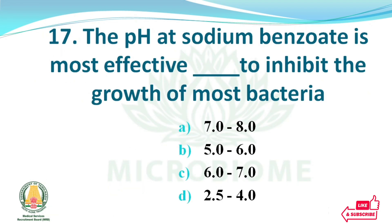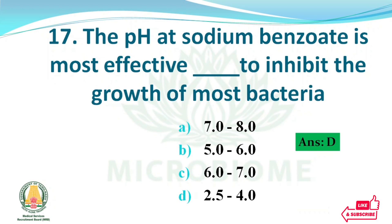The pH at which sodium benzoate is most effective to inhibit the growth of most bacteria — options: 7 to 8, 5 to 6, 6 to 7, 2.5 to 4. The right answer: option D, 2.5 to 4.